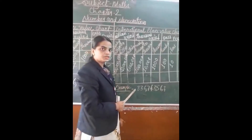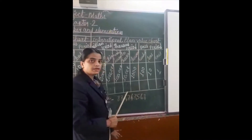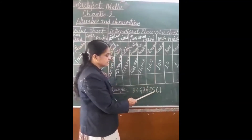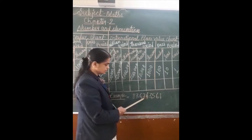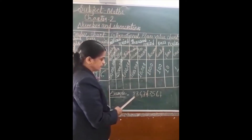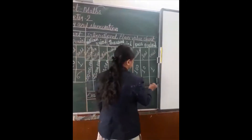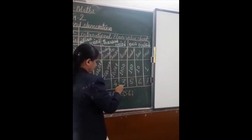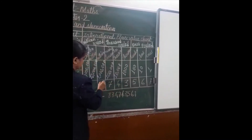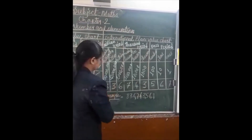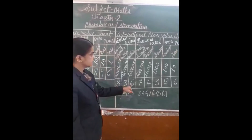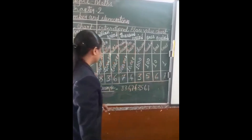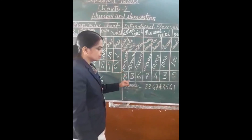Now we will take one more example of the international place value chart. First we will count the digits: 1, 2, 3, 4, 5, 6, 7, 8, 9. The places are ones, tens, hundreds, thousands, ten thousands, hundred thousands, millions, ten millions, and hundred millions. Now we will put the digits in their proper places: 7, 6, 5, 3, 4, 7, 6, 3, 8. The number name is 836,743,567. In the international system, we put commas after each three digits.